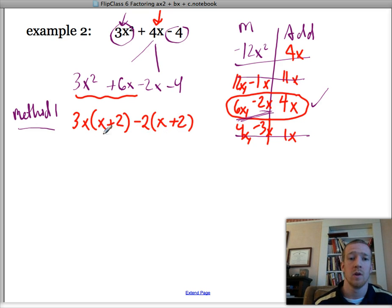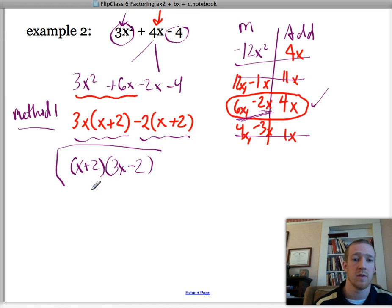And now just as before, we can factor out or undistribute the x plus 2 from each of these terms. So I can take it out of here and divide it out of here. So x plus 2 times, leaves me with a 3x, and leaves me with a minus 2. That is my final answer.